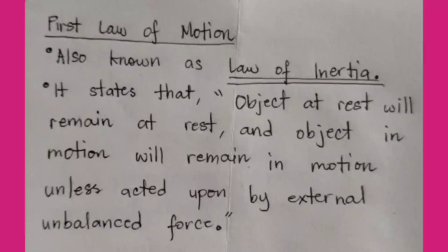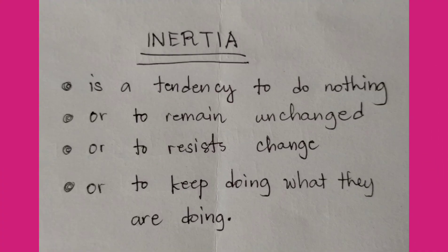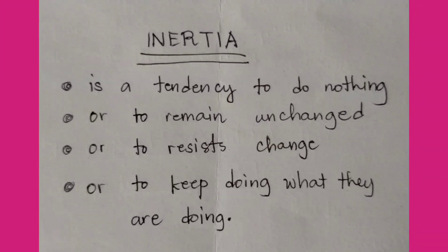The first law of motion is also known as the law of inertia. It states that an object at rest will remain at rest and an object in motion will remain in motion unless acted upon by an external net force or unbalanced force. Inertia is a tendency of an object to do nothing or to remain unchanged, or a property of an object to resist any change in its state of motion.